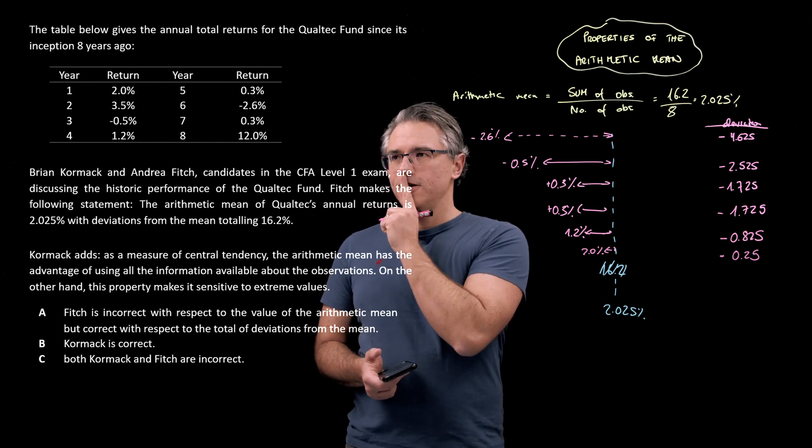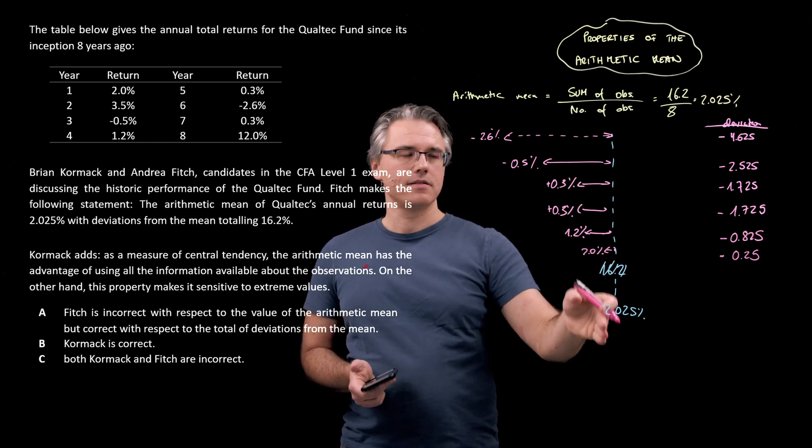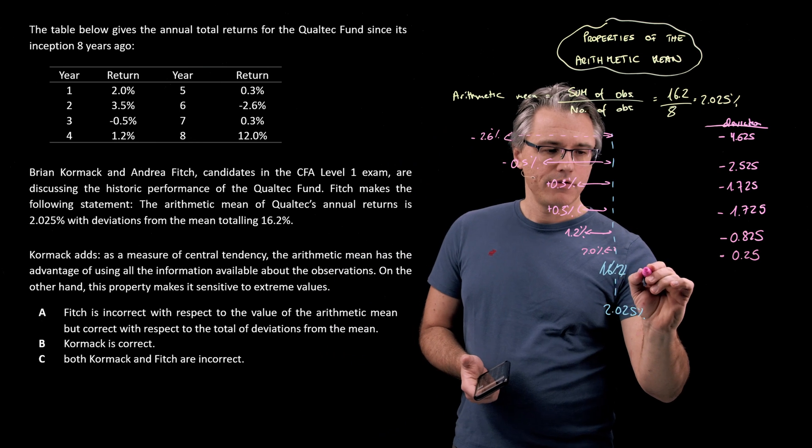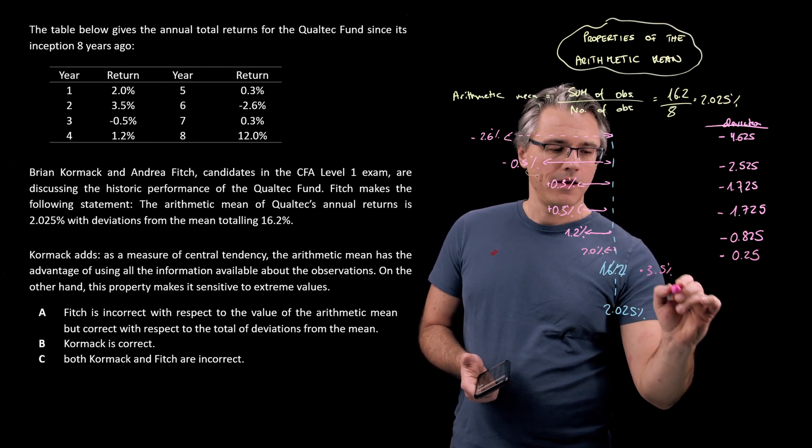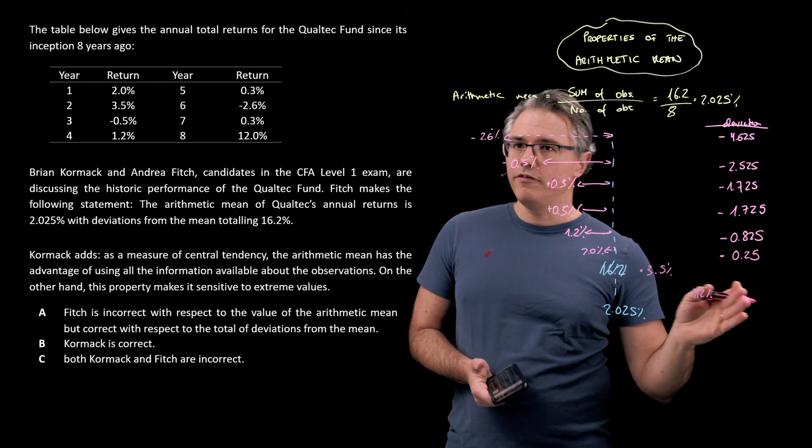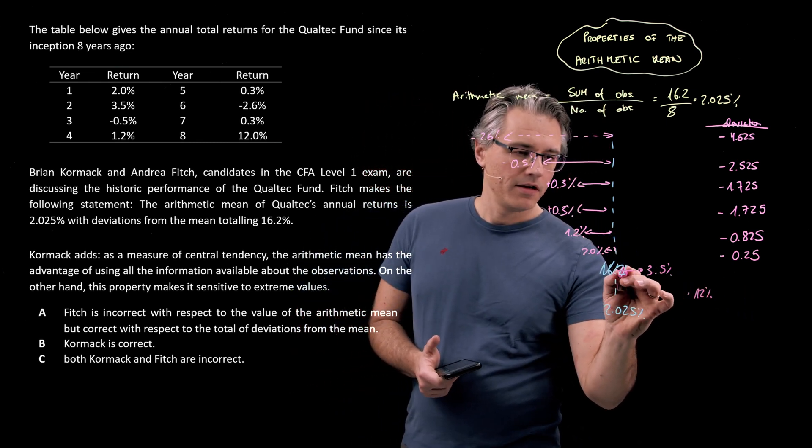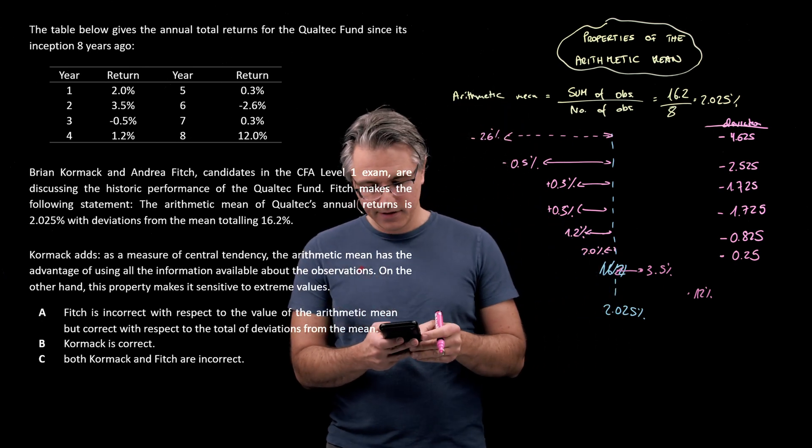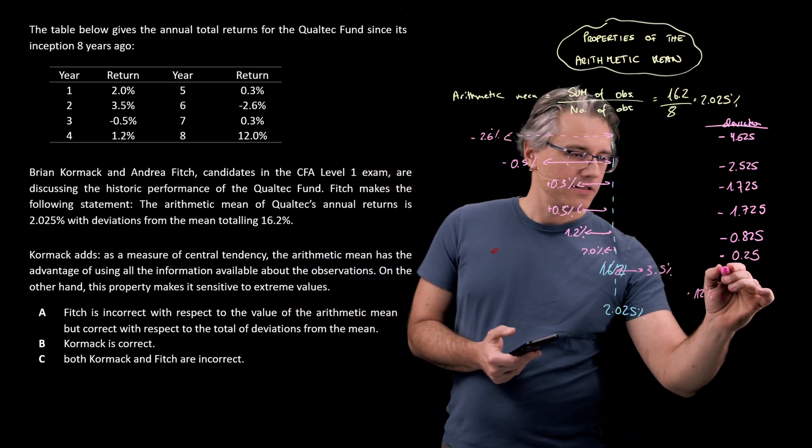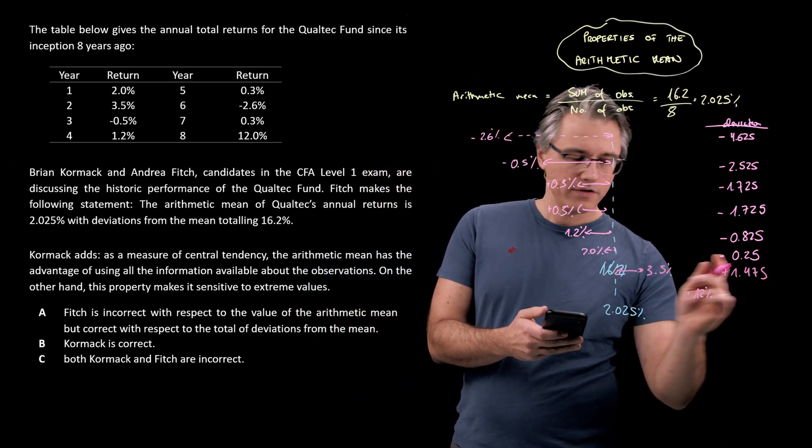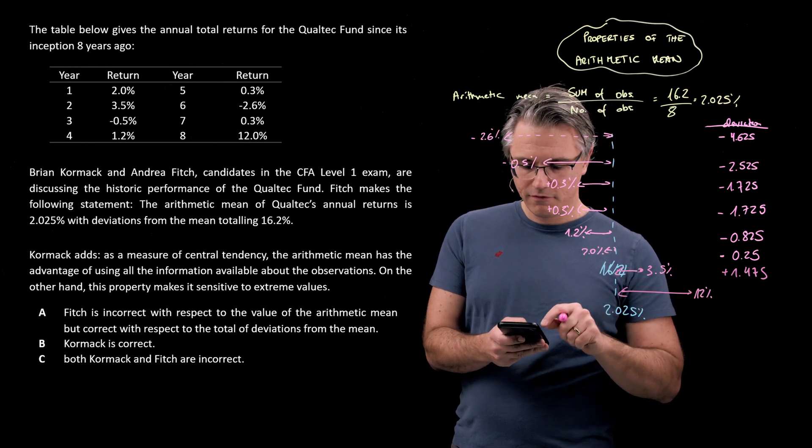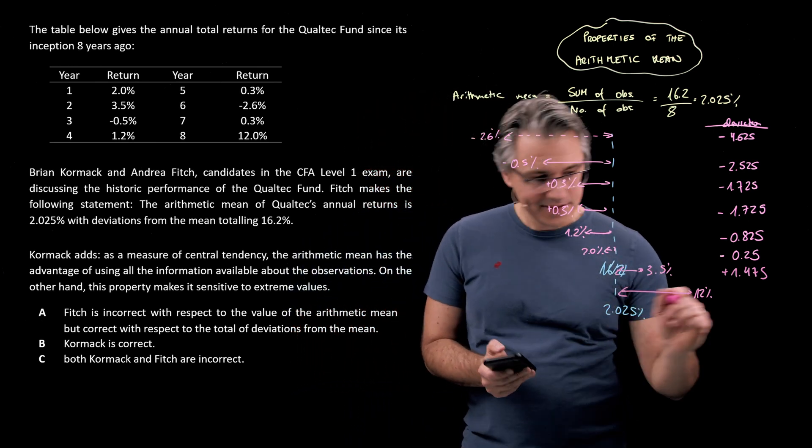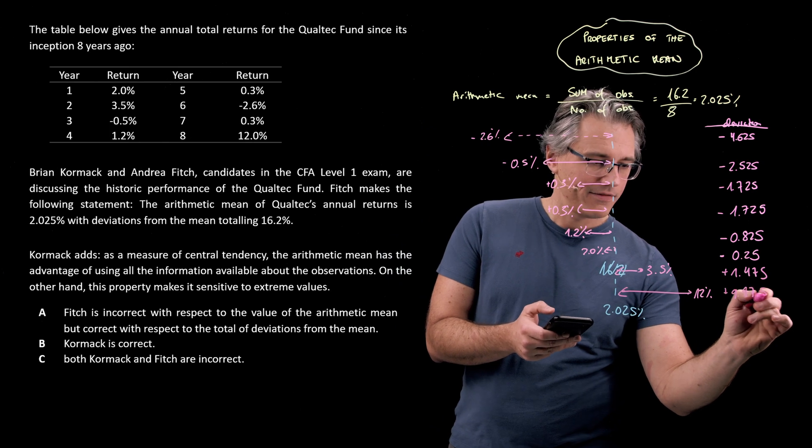Then we've got two observations, which are going to be on the right-hand side of this axis of this line because they're higher than the mean. So, we've got a 3.5 over here, and we've got a 12, which obviously would be further out if this was drawn to scale. So, 3.5 minus 2.025, that gives a positive deviation of 1.475, and this one is 12 minus 2.025. That's even more positive. That's a 9.975.